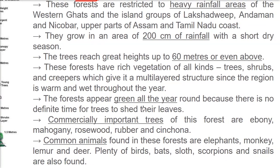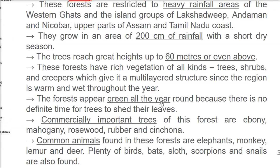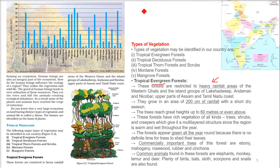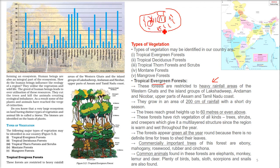These forests appear green all year because even if some trees shed their leaves, all others remain green. Commercially important trees include Ebony, Mahogany, Rosewood, Rubber, and Cinchona. These are very important in terms of their commercial value.